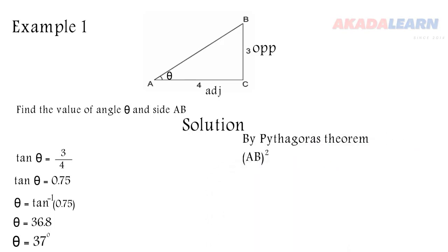So to find our side AB, we use our Pythagorean theorem. AB square is equal to BC square plus AC square. That is, the square of the hypotenuse is equal to the sum of the square of the two other sides. So we have 3 square plus 4 square. Now 3 square is 9, 4 square is 16. 9 plus 16 is 25. So we take the square root of both sides and our AB is 5.